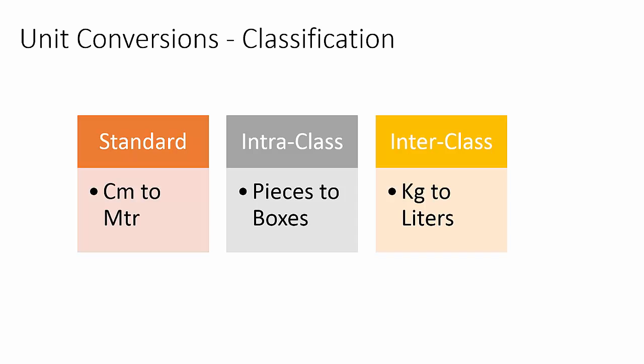Inter-class conversions set up product-specific conversion rules for units of measure across unit classes. For example, you can set up a conversion rule for a product that converts kilograms to liters. Kilograms reside in the mass unit class and liters reside in the liquid volume unit class.